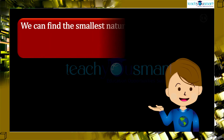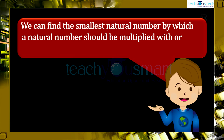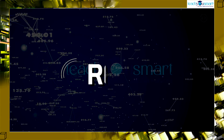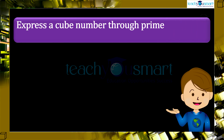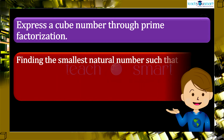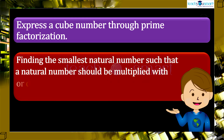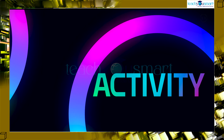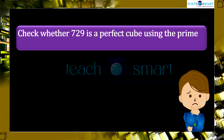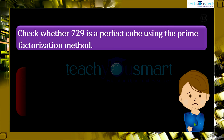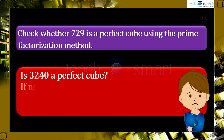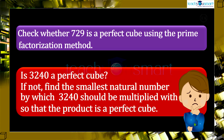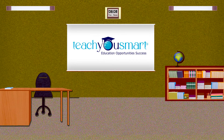Like this, we can find the smallest natural number by which a natural number should be multiplied or divided to make it a perfect cube. Today we discussed how to express a cube number through prime factorization, and how to find the smallest natural number to multiply or divide by to make a number a perfect cube. Activity: Check whether 729 is a perfect cube using the prime factorization method. Is 3240 a perfect cube? If not, find the smallest number by which 3240 should be multiplied so that the product is a perfect cube. That's all for now — see you in the next class.